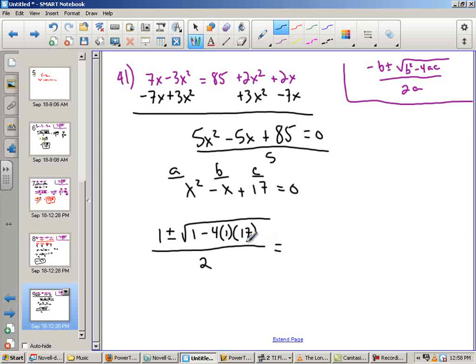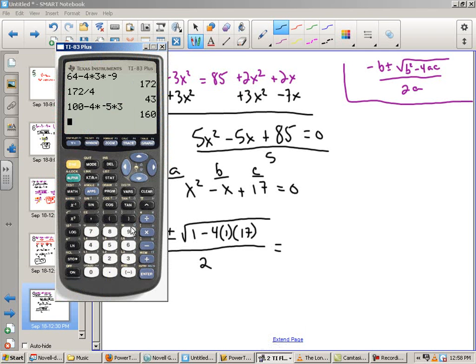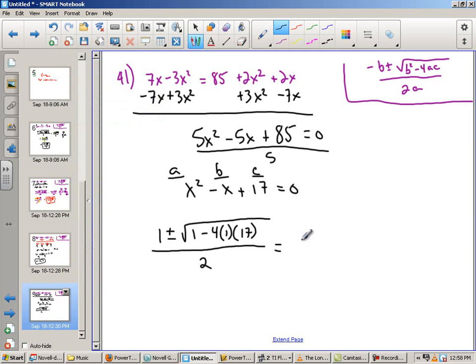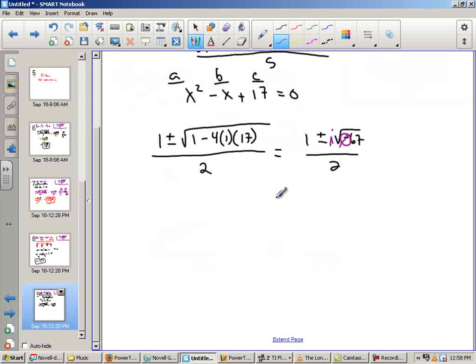Already, I'm thinking I'm going to have an imaginary number here, but I'll plug all this into my calculator. We're going to do 1 minus 4 times 1 times 17. I get a negative 67. Now, 67 is prime, so this is 1 plus or minus the square root of negative 67 over 2. I notice right away that I have a negative inside a square root. That means it's going to come out as an i. So my final answer is 1 plus or minus i root 67 all over 2.